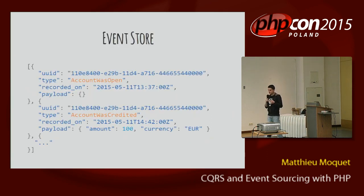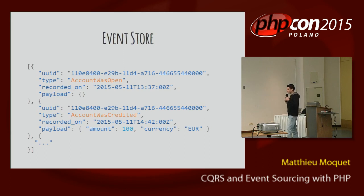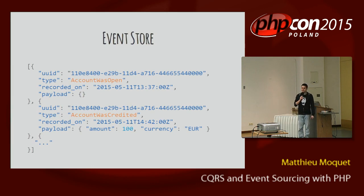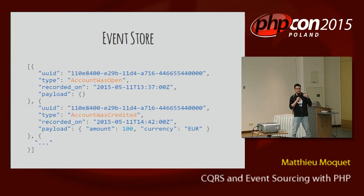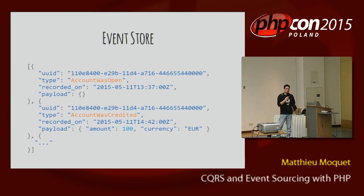With event sourcing, the only thing you store is the event. So there are two events of 10 euros each, so I can determine that at this moment I have 20 euros. That's what an event store looks like — I have a list of events: first I open an account, then the account was credited. There's an aggregate ID generated by the application that groups all the events together to determine everything that happened on the account. There's also a playhead field, which is a custom ordering counter, and a payload which is schemaless serialized data on your event.